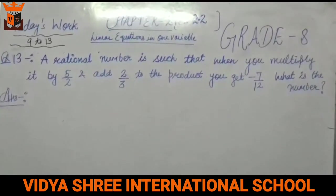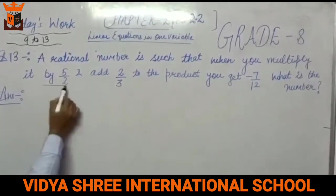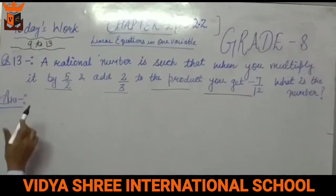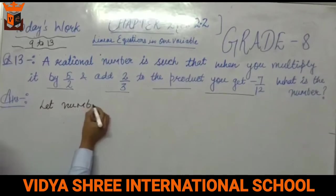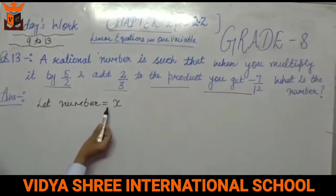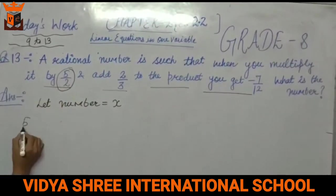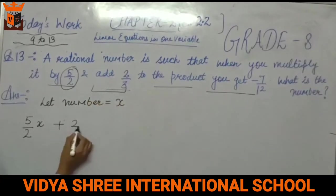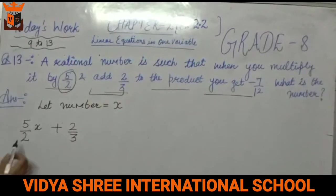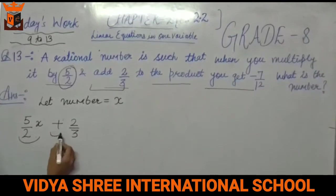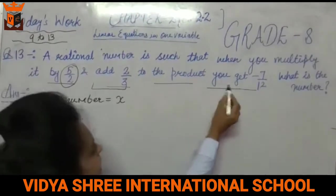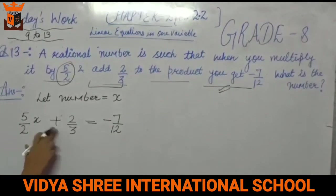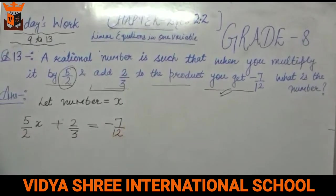Now this is question number 13. A rational number is such that when you multiply it by 5/2 and add 2/3 to the product, you get minus 7/12. What is the number? We let the number be x. Multiplying x by 5/2 gives 5x/2. Then we add 2/3 to the product, and that equals minus 7/12.